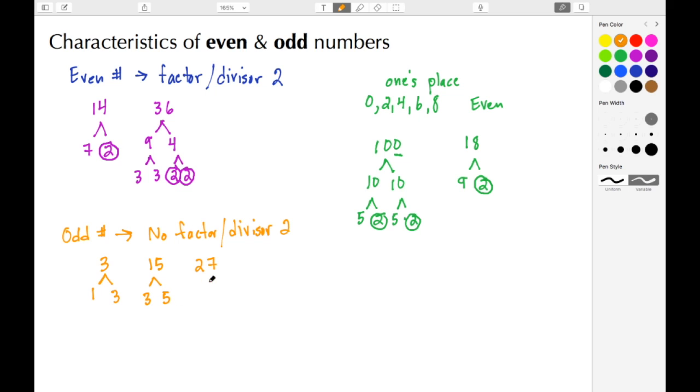Let's go to 27. 27 we have 9 times 3, and that 9 can be broken down to 3 and 3. Again, none of the factors for 27 or 2, none of the factors for 15 have a 2, and none of the factors for 3 have a 2. So these here are considered odd numbers.